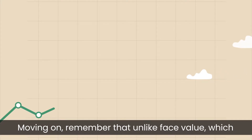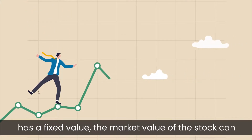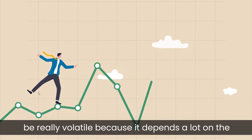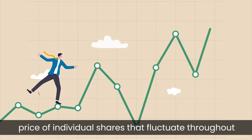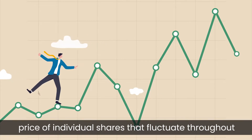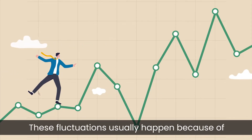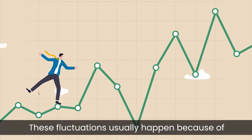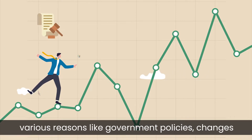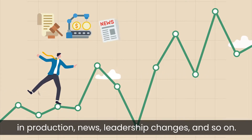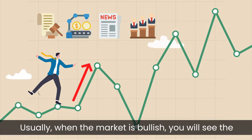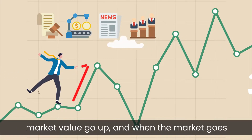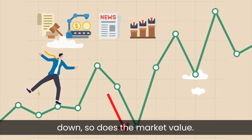Remember that unlike face value, which has a fixed value, the market value of the stock can be really volatile because it depends a lot on the price of individual shares that fluctuate throughout the trading period. These fluctuations usually happen because of various reasons like government policies, changes in production, news, leadership changes and so on. Usually when the market is bullish, you will see the market value go up, and when the market goes down, so does the market value.